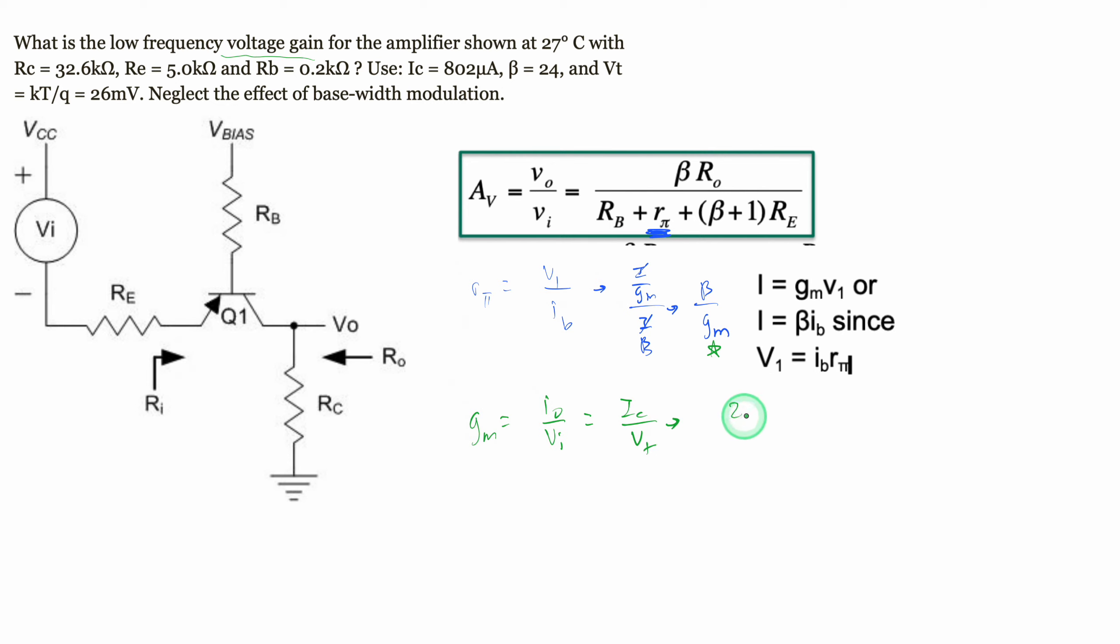If we do our I_C over V_T, we're going to have 802 microamps, which is 10^-6, divided by 26 millivolts, so that's 10^-3. This is going to give us approximately 30.846 milliamps per volt, and this is our g_m.